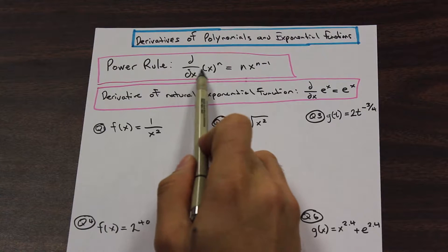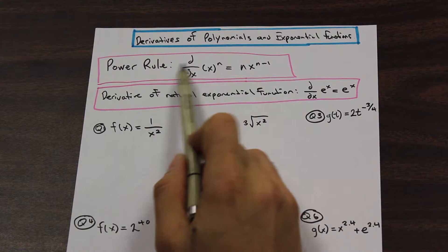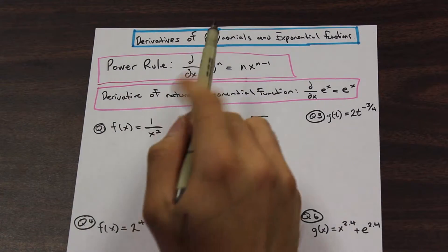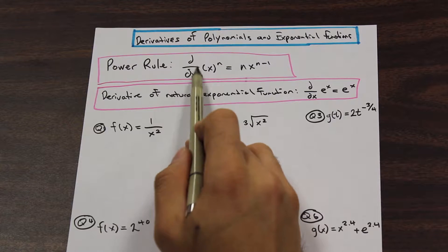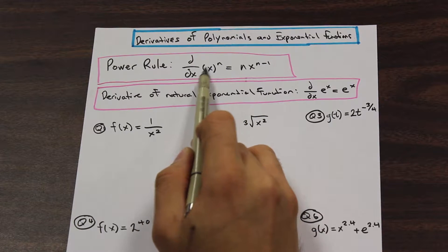And this notation here means d by dx, so the derivative with respect to x. We'll get into more of that later, but we'll just introduce you to that notation right now. So we have d by dx of x to the n, so we're taking the derivative with respect to x here.